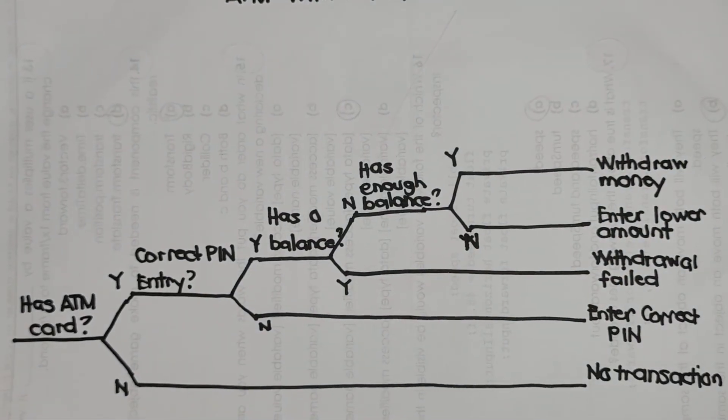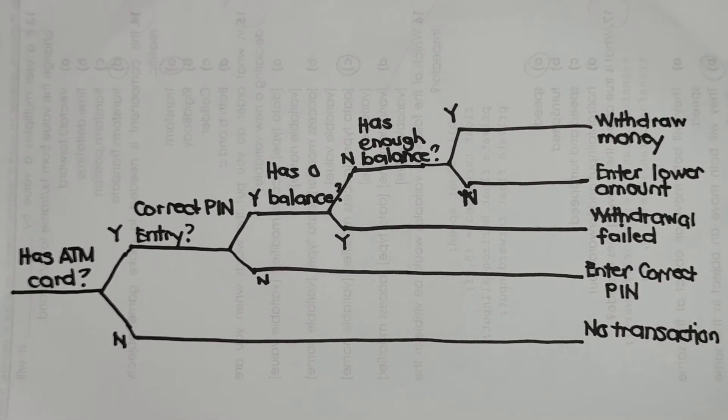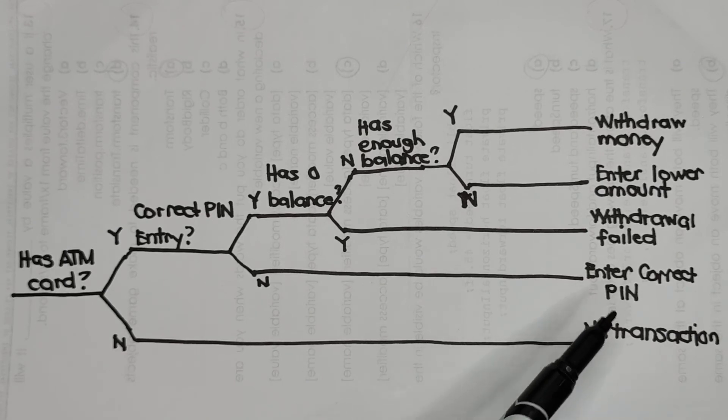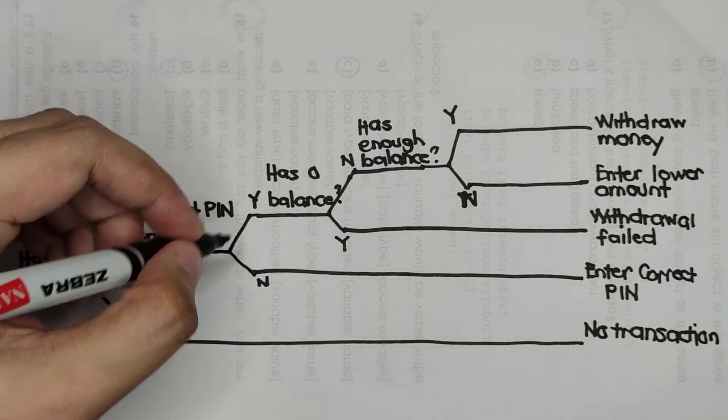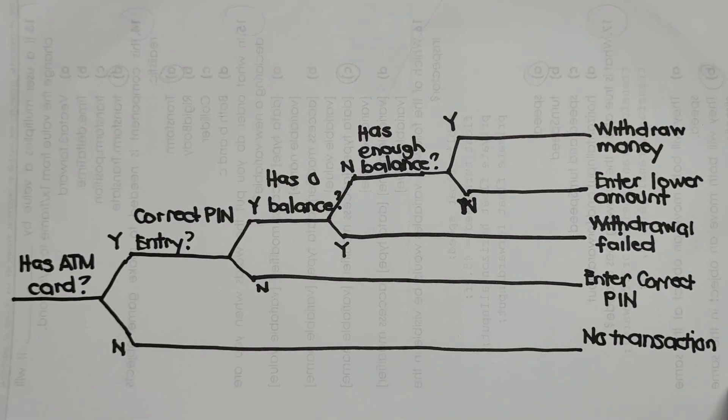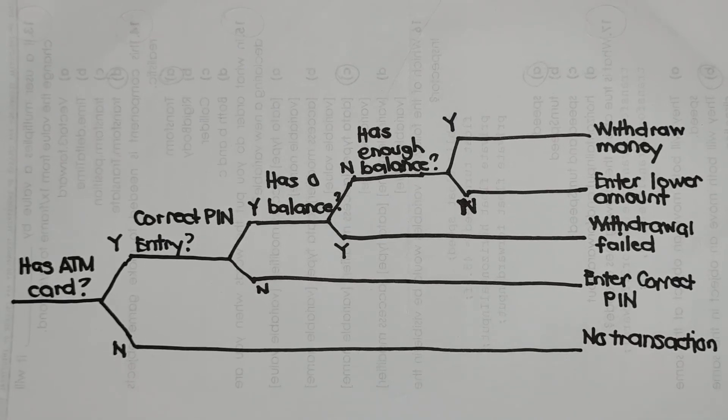This is our example for our decision tree. Again, decision tree questions should be answerable by yes or no. For every branch, we're going to have either the description of what will happen or an advice or directive so that he or she can return to the line with the yes and go to the success of ATM withdrawal. That's it for ATM withdrawal decision tree. If you have any questions, feel free to ask and comment below. Thank you very much for listening. I hope that you learned something about the decision tree. Please like and subscribe to my channel. Thank you very much and good day.